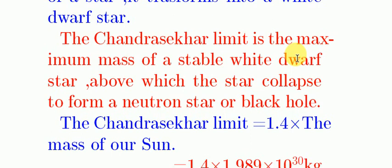So the Chandrasekhar Limit is associated with the mass of a white dwarf star, and a white dwarf star is a changed form of a star. The Chandrasekhar Limit is the maximum mass of a stable white dwarf star, above which the star collapses to form a neutron star or black hole.